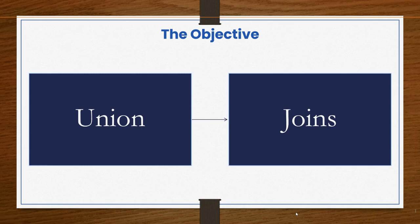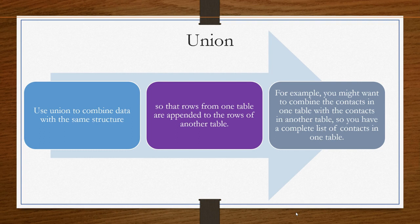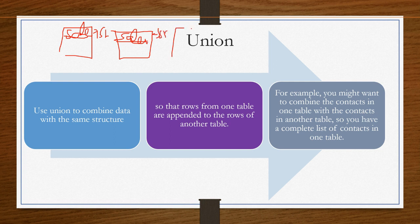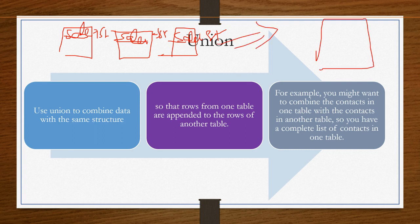Let us understand the difference between union and joins, and when you have to perform each. Imagine you have sales data from different countries or states — you have three or four different files, maybe Excel or CSV. One file has the sales data of one state, another file has the sales data of another state. If you want to combine all of that into a single file, you can go with union.